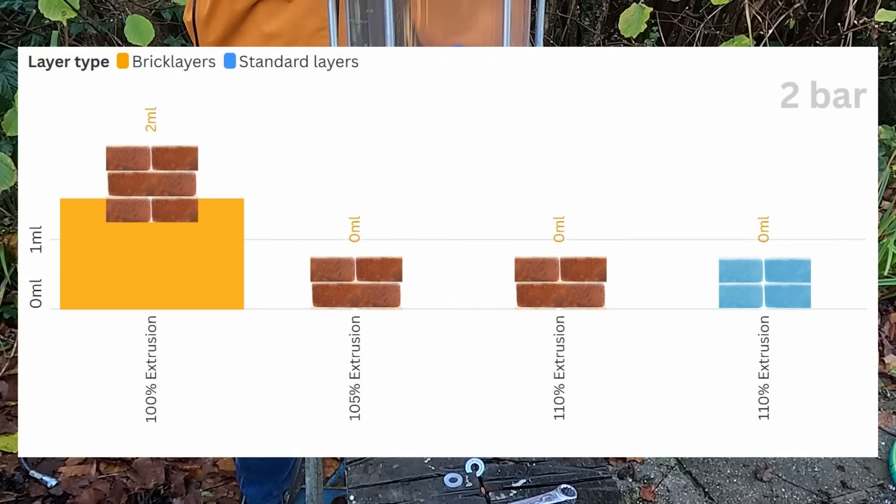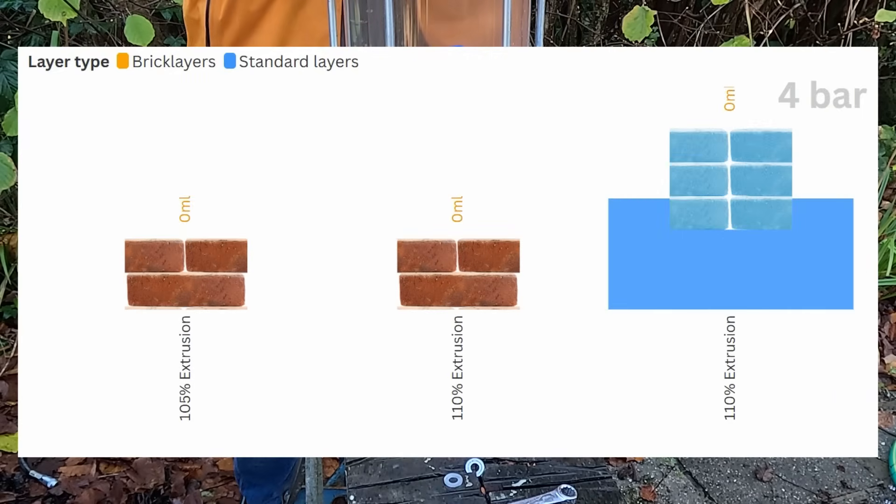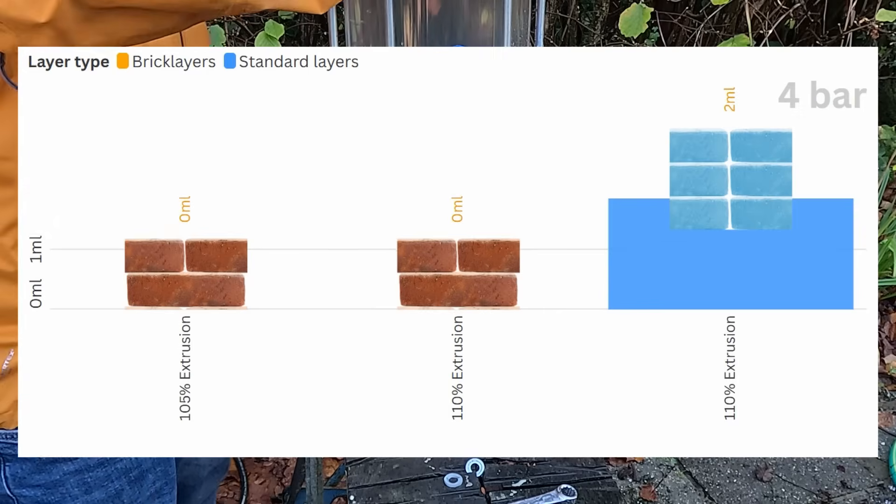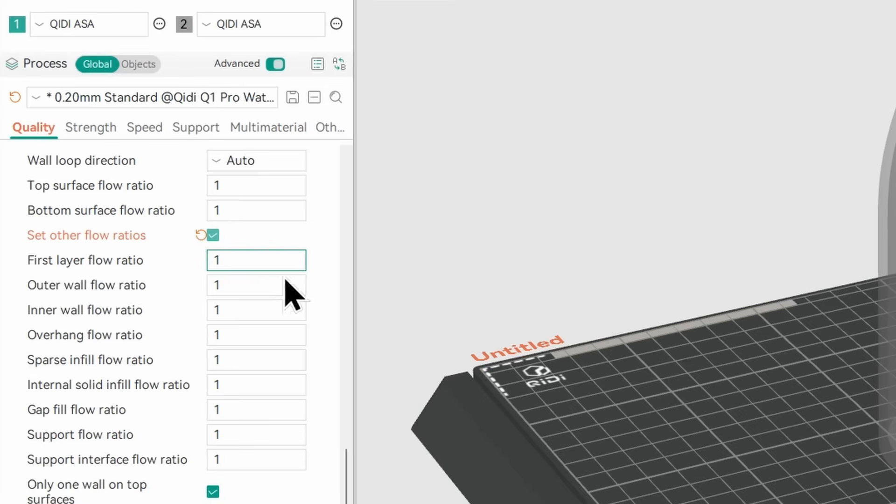At 2 bar, this performed as well as the brick layer version, which is a bit disappointing. But at 4 bar, it took on about 1 to 2 milliliters of water, demonstrably showing that adding brick layers can improve the waterproofness of a 3D print.